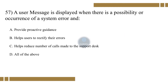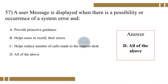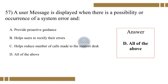Question 57. A user message is displayed when there is a possibility or occurrence of a system error. Option A: Provide proactive guidance. Option B: Help users to rectify their errors. Option C: Help reduce number of calls made to the support desk. Option D: All of the above. The correct option is D, all of the above.